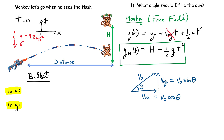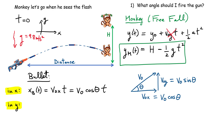The x-position of the bullet as a function of time starts from the origin, so there's no initial x position term. The next term is the initial velocity in the x direction multiplied by time: v₀x · t. There is no acceleration in the x direction, so that's it. Substituting v₀x = v₀ cos θ, we get x_bullet(t) = v₀ cos θ · t.